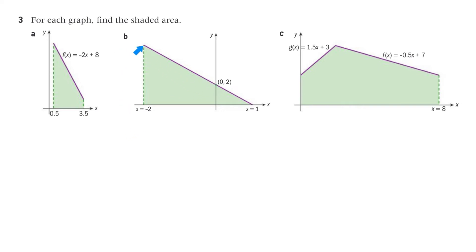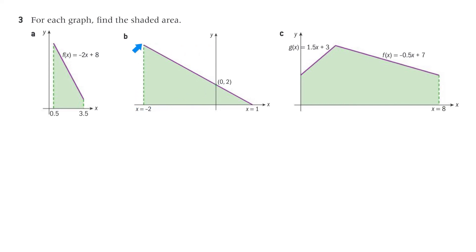Part B: to find the shaded area, we need the equation of the line. Using the two known points, the line is y = −2x + 2 (slope is negative, b = 2, drop of 2 over run of 1). Substitute x = −2 to find the y-value at that point. Alternatively, the smaller and larger triangles are similar — since the base triples from 1 to 3, the height also triples from 2 to 6. So the coordinate point is (−2, 6), giving enough dimensions for the triangle area.